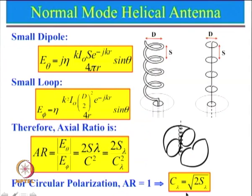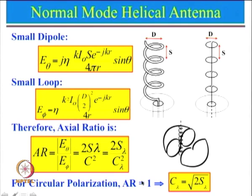Let us look at the condition one more time. C_lambda squared set equal to 2*S_lambda allows one to get an axial ratio close to 1. Using this concept it becomes easier to design circular polarization, and it is currently a very good research topic. If you work on this — do simulation and some fabrication — you will be able to publish papers.